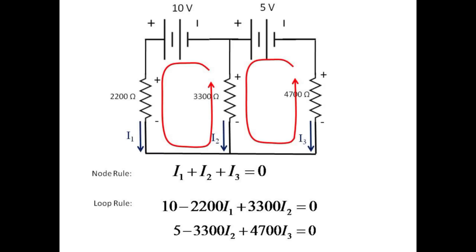Circulating around the second loop gives a gain of 5 volts, a drop of 3300I2, and a gain of 4700I3. We now have three equations for the three unknown currents. Use your favorite linear system of equations solver to perform the math and determine the currents.